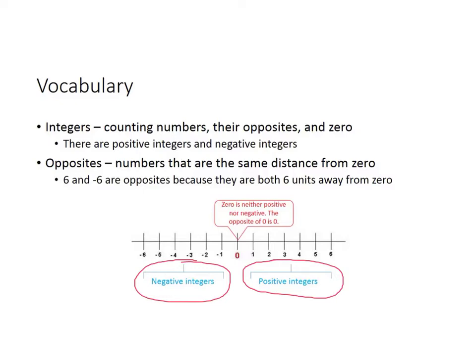Opposites are numbers that are the same distance from zero. Six and negative six are opposites because they are both six units away from zero. Note that zero is neither positive nor negative, and the opposite of zero is zero.